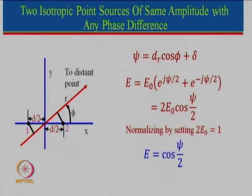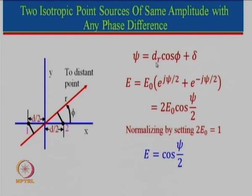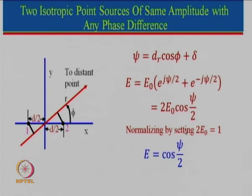Now let us take the case of two isotropic sources of same amplitude with any arbitrary phase difference δ. We can do the derivation with −δ/2 and +δ/2. The expression is similar except that ψ_total now includes δ. The expression is exactly the same as before — cos(ψ/2) — except that ψ now consists of the distance term as well as the phase δ. By changing the value of the phase we can change the beam direction. If δ = 0 beam maxima is in the broadside direction; when δ = 90° the beam maxima was at 120° for λ/2 spacing; when δ = 180° the beam maxima is along end-fire.